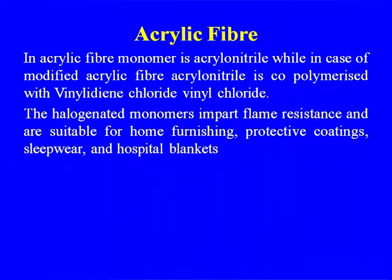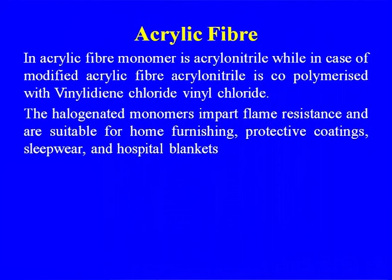In acrylic fiber, the monomer is acrylonitrile. In modified acrylic fiber, acrylonitrile is copolymerized with vinylidene chloride or vinyl chloride. The halogenated monomers impart flame resistance and are suitable for home furnishing, protective coatings, sleepwear, and hospital blankets. These are some of the advantages of going for modified acrylic fiber.